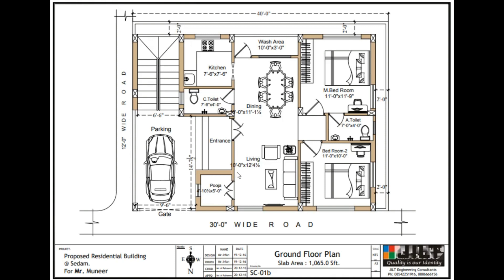Here we put a dining area that is opposite to the kitchen. Then we put a wash area — that is 10 feet by 3 feet — which is sufficient enough as a washing area to wash clothes and so on.